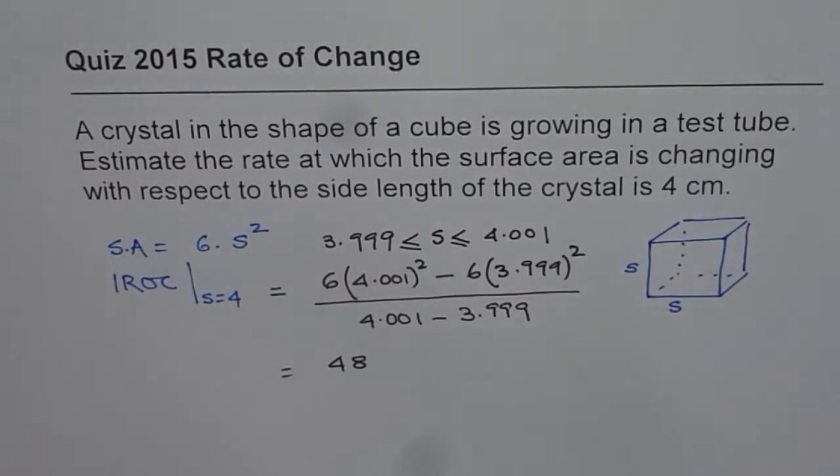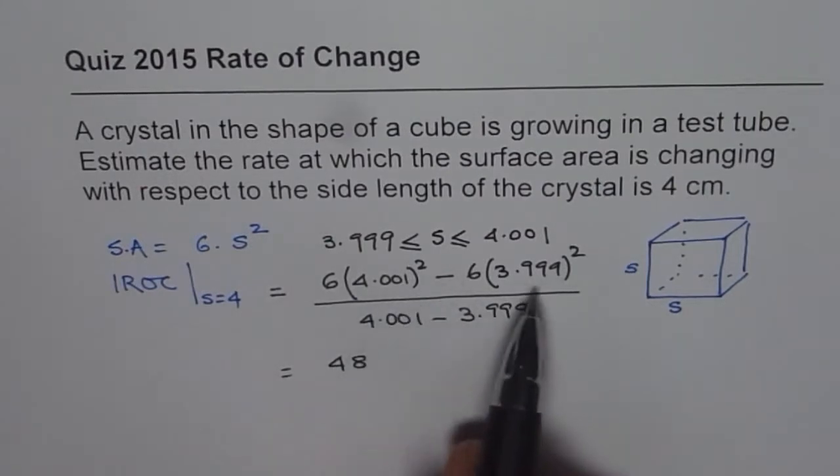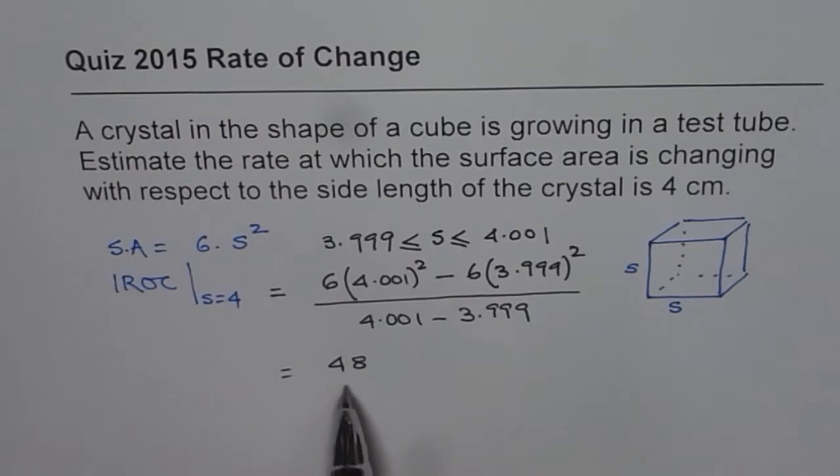Now that is the instantaneous rate of change when S is equal to 4.001. So always it is an estimate, right? So we are approximating a point which is very close to S equals 4.001. Now the question is what is the unit?